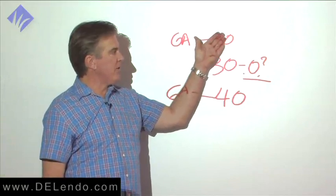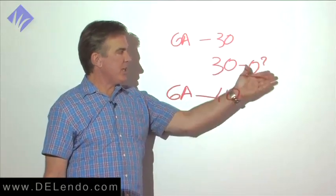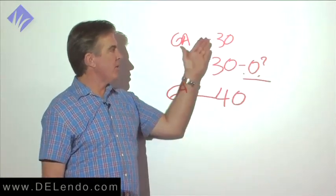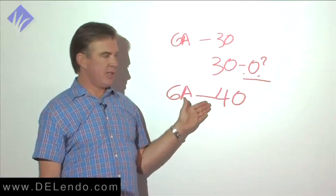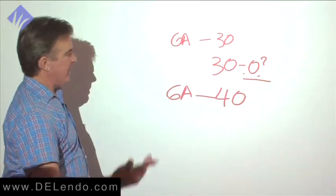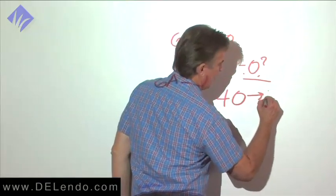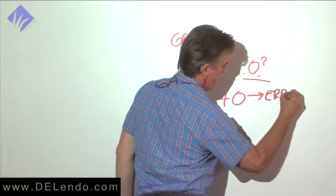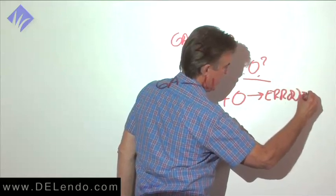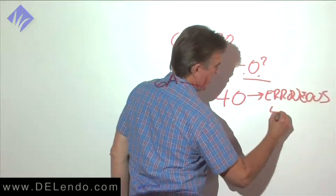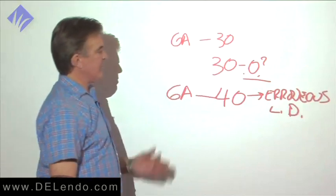If the end of the root canal is 0.3 millimeters, and you put a 30.06 or 30.08 to length, it should still be a 30 at the terminus. When you have increasing gauging file sizes, that usually speaks to erroneous length determination. Usually, it's because you're long.